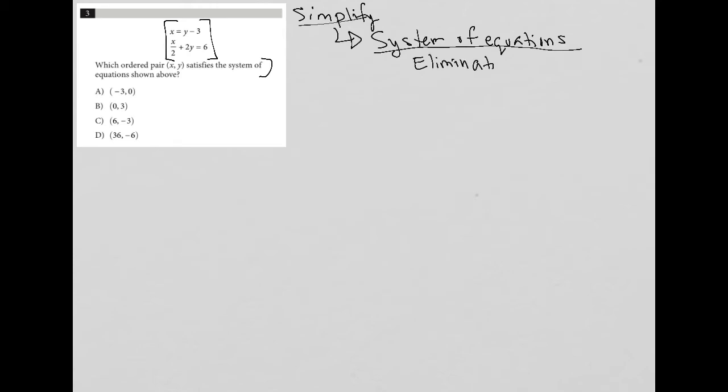Elimination is when you eliminate one variable, combine the two equations, and solve for the remaining variable. The other process is substitution. These are the two main processes.